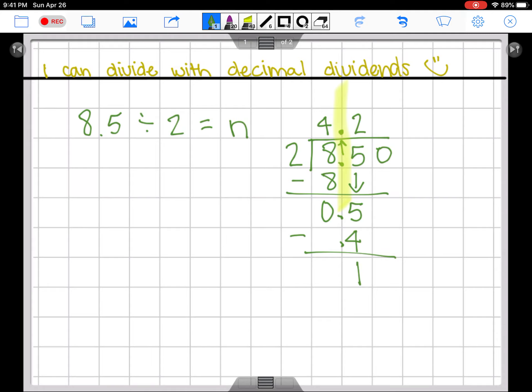Just because we have a decimal already in our dividend does not mean that we won't still need to use that strategy of the equivalent decimal. So we're still doing that. We're dropping down that zero, and now we can say how many times can two fit into ten, or one tenth?